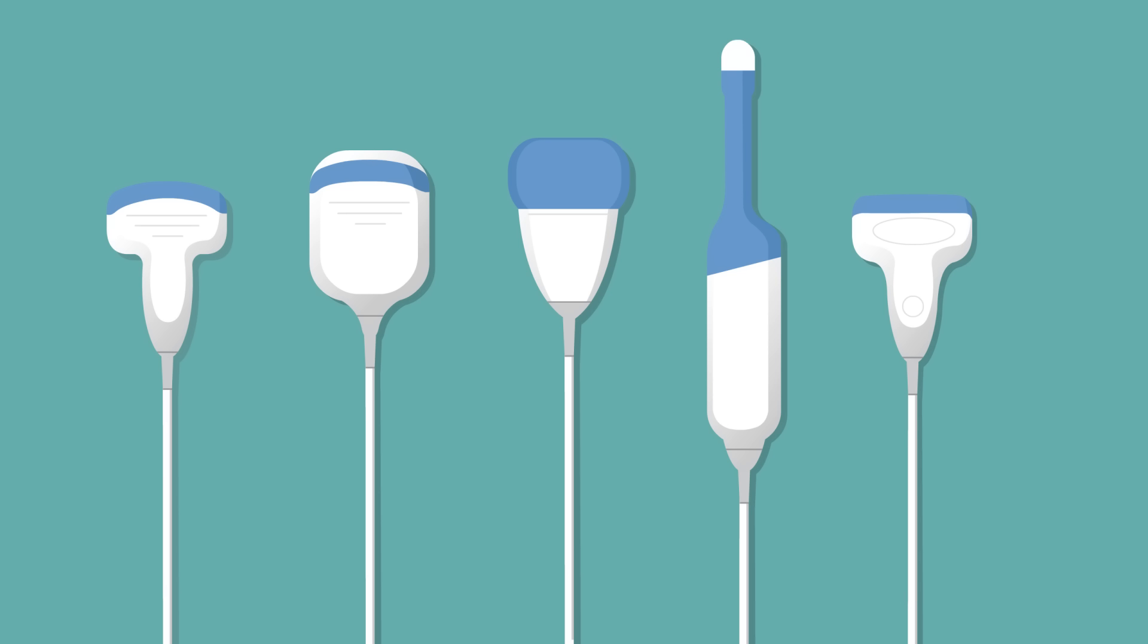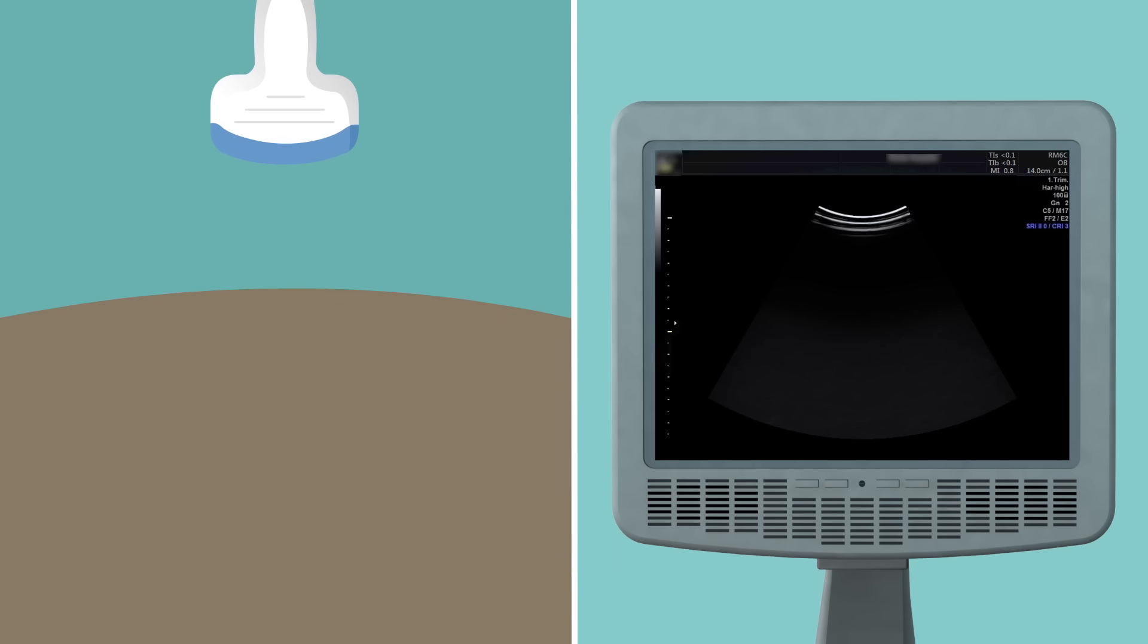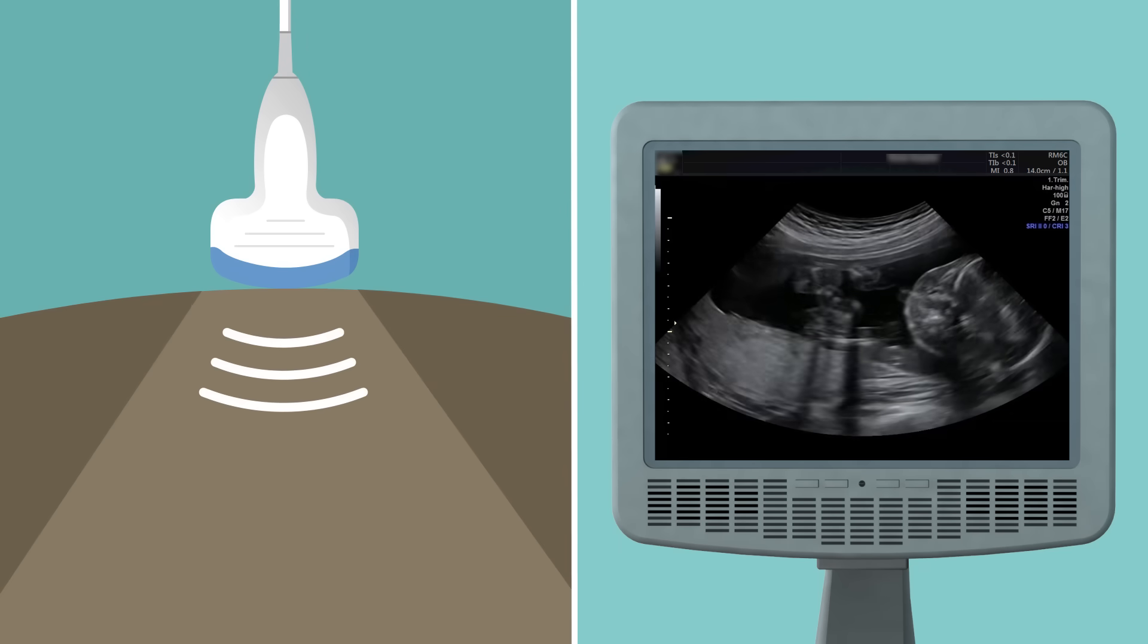Ultrasound probes come in different shapes and sizes depending on their use, and the sonologist should choose the appropriate probe to explore the specific area of interest in the body. Different probes also produce different frequencies of ultrasound.